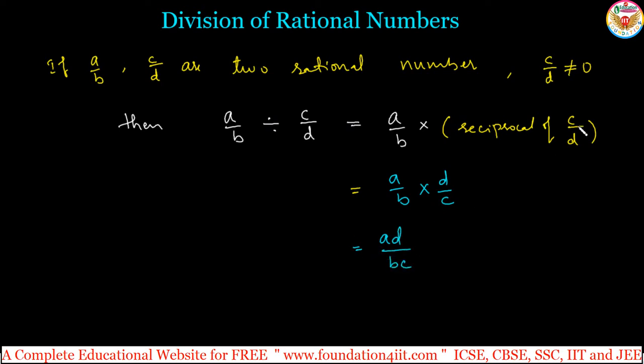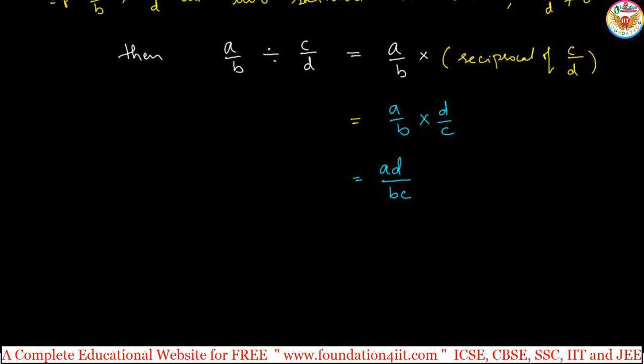Here if c/d is zero, what will happen? Then a/b divided by zero is undefined. Division by zero is not defined, there is a rule. And anything we want to divide the same, let us see with examples. Just only the inverse of multiplication, remember that.